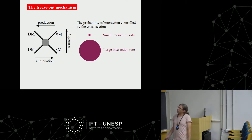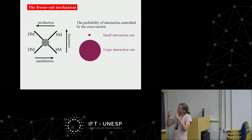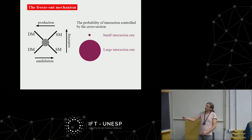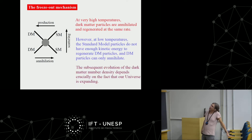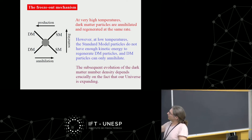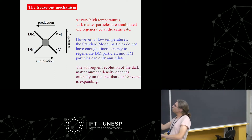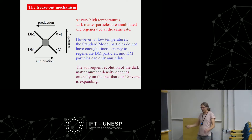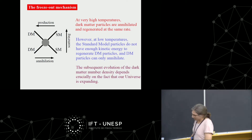The probability of interaction is controlled by the cross-section — essentially the size of the target as seen by the projectile. At high temperatures, when T > m_DM, dark matter particles can annihilate into lighter SM particles and vice versa; creation and destruction were in equilibrium. As the universe expands and cools, SM particles no longer have enough energy to regenerate dark matter particles, so the dark matter population can only decrease.